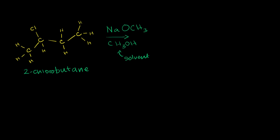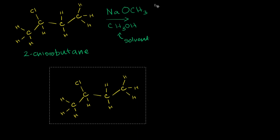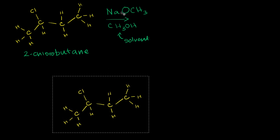So let's think about what might happen here. The first thing, let me just redraw the molecule right there. The first thing you need to realize is this sodium methoxide, it is a salt. When it's not dissolved, it's made up of a positive sodium cation and a negative methoxide anion. So let me draw the methoxide part right here, a negative methoxide anion.